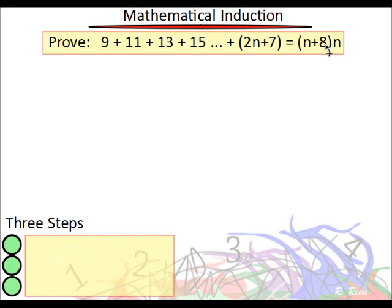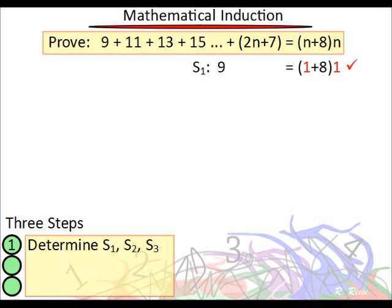So if you wanted to find the sum of the first ten numbers, you would add these ten numbers together, or you can simply plug in ten for n. Now, there are basically three steps to this. The first step is to determine the sum of one number, the sum of two numbers, and the sum of three numbers. The sum of one number is equal to the same thing as plugging one in, and that checks. What about two numbers?